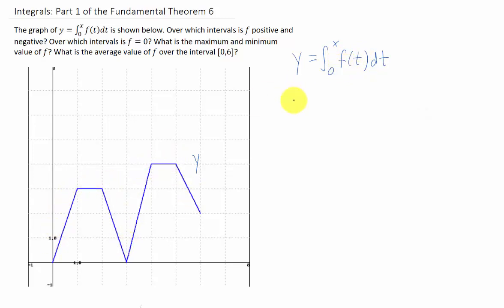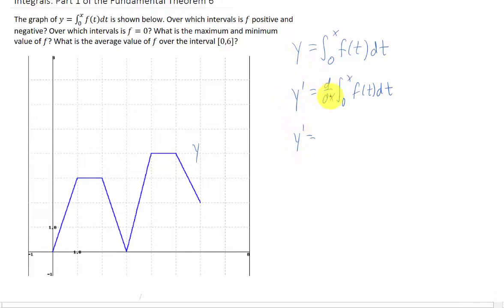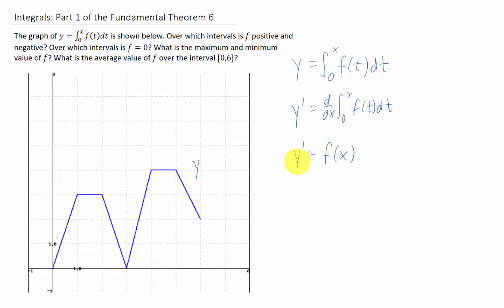I think the easiest way to understand this is by taking a first derivative of our function. If we take a derivative of y with respect to x, I'll just call it y prime, what is the derivative of this integral here? Well, the first fundamental theorem of calculus tells us that this is just f of x. So now we have this equation here that says y prime equals f of x. That means that the slope of y equals the function f.